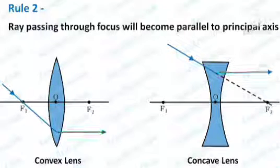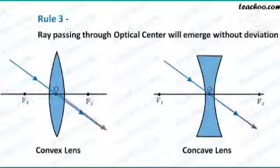Third, rays passing through the optical center will pass through the lens without bending. So, that's all in this video. Thank you.